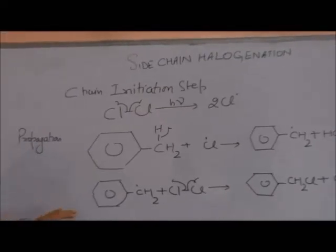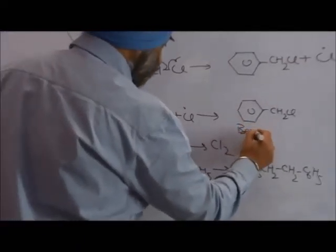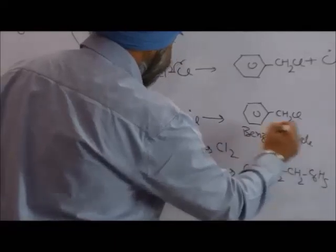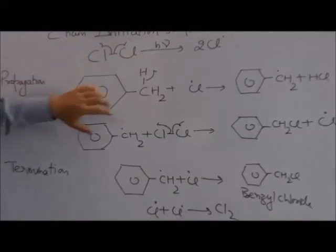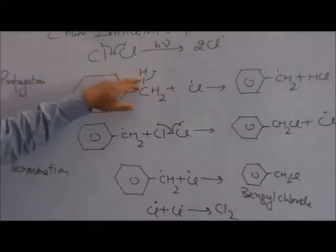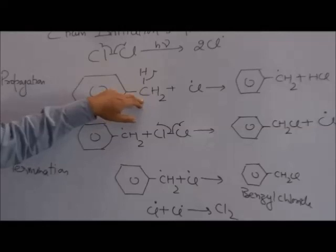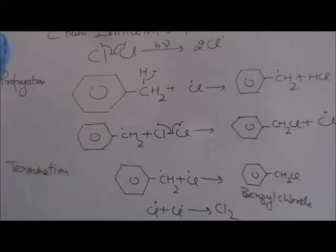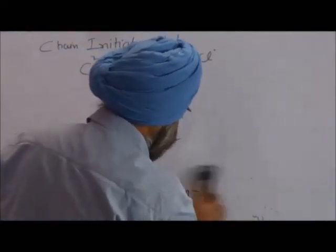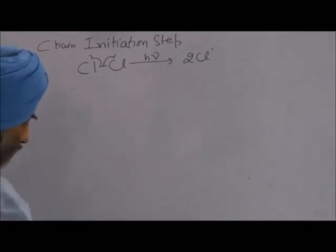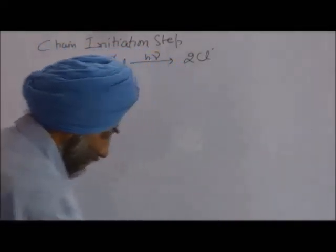How we convert toluene into benzyl chloride — this is benzyl chloride. Now one question may come to mind: toluene has a benzene ring where all the carbons have hydrogen. So why is hydrogen extracted only from the CH₃ group? That is one important question.